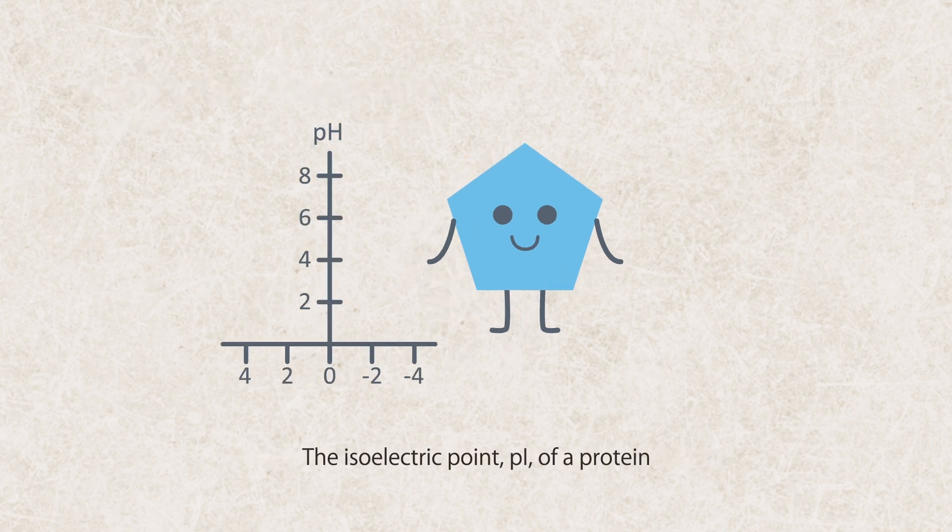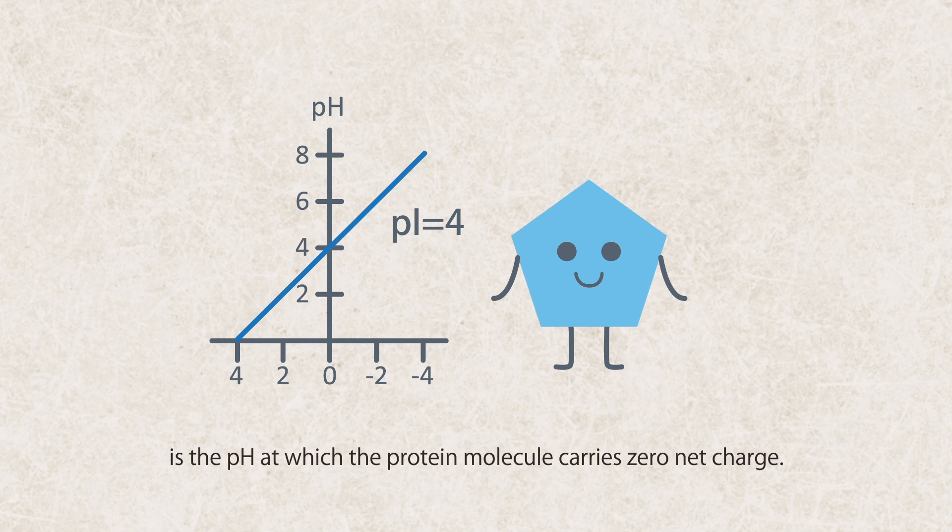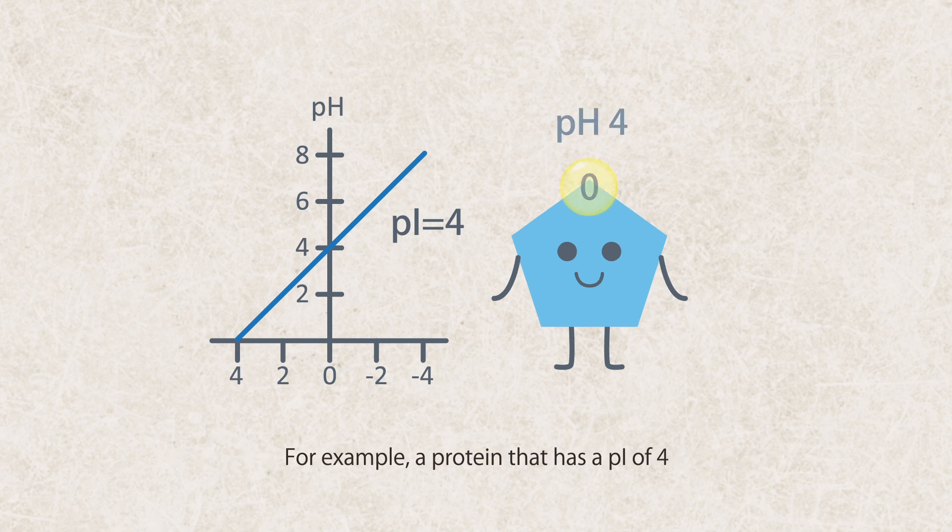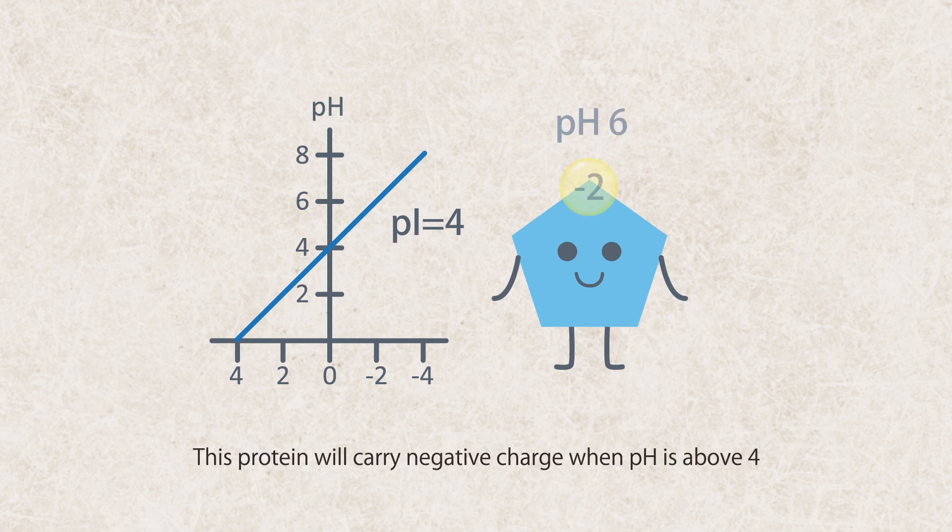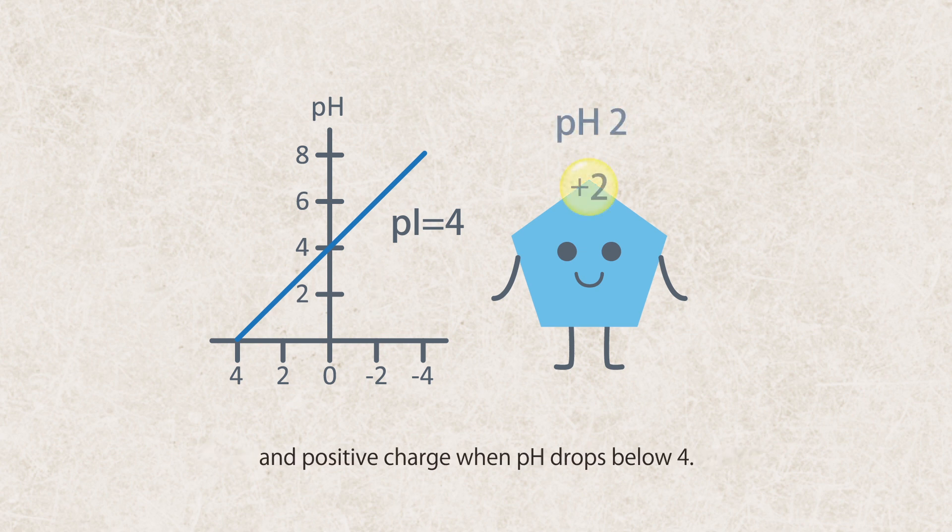The isoelectric point PI of a protein is the pH at which the protein molecule carries zero net charge. For example, a protein that has a PI of 4 carries zero net charge at pH 4. This protein will carry negative charge when pH is above 4 and positive charge when pH drops below 4.